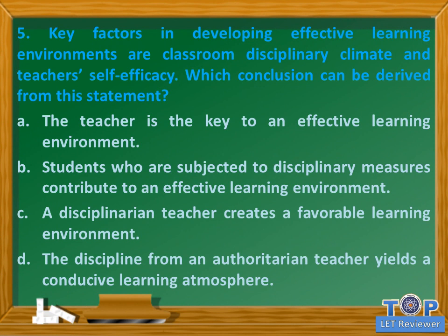Question number five: key factors in developing effective learning environments are classroom disciplinary climate and teacher's self-efficacy. Which conclusion can be derived? A) the teacher is the key to an effective learning environment, B) students subjected to disciplinary measures contribute to an effective learning environment, C) a disciplinarian teacher creates a favorable learning environment, D) discipline from an authoritarian teacher yields a conducive learning atmosphere.